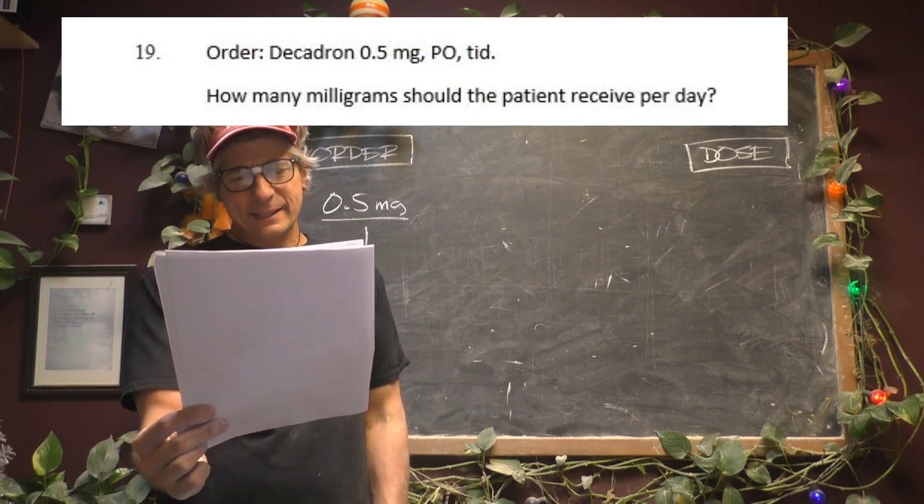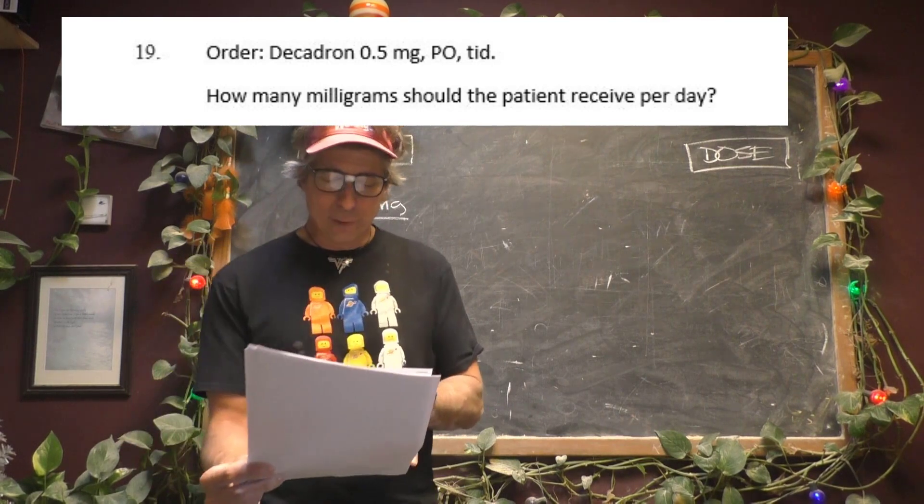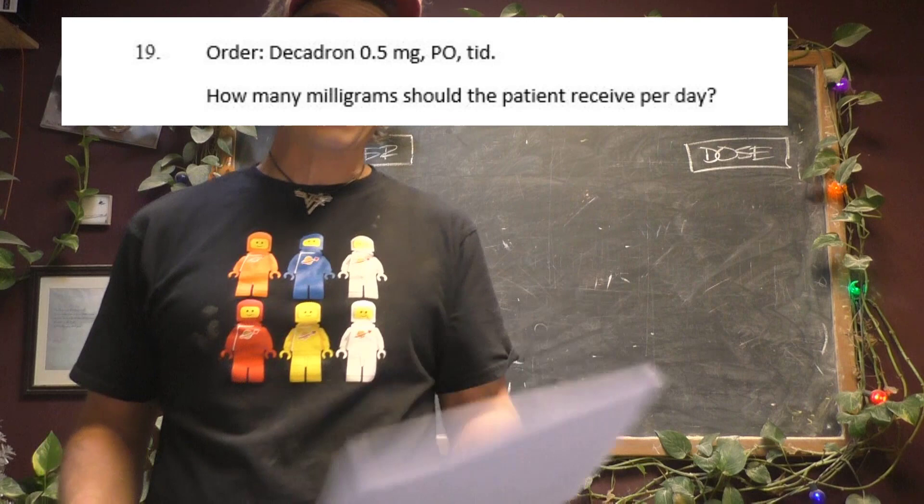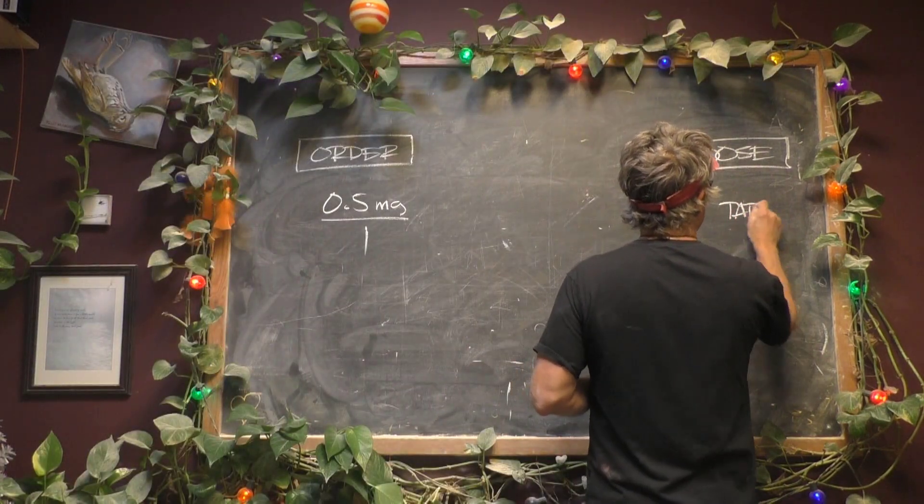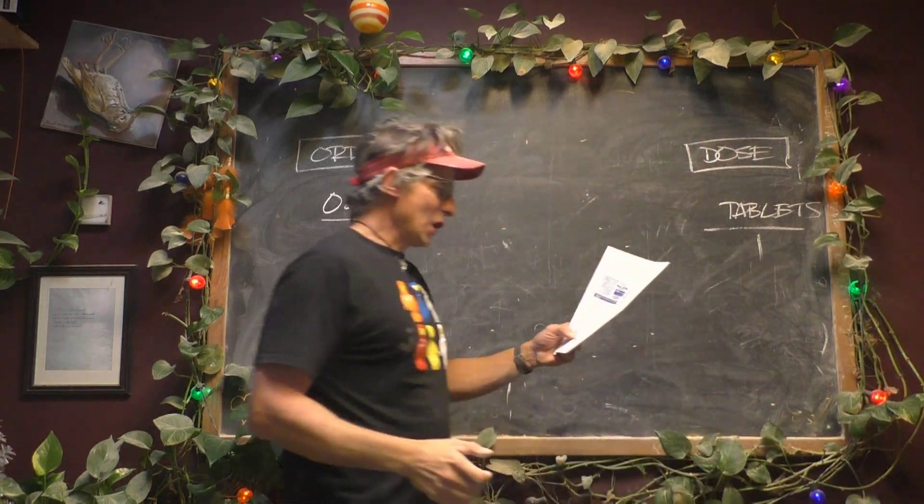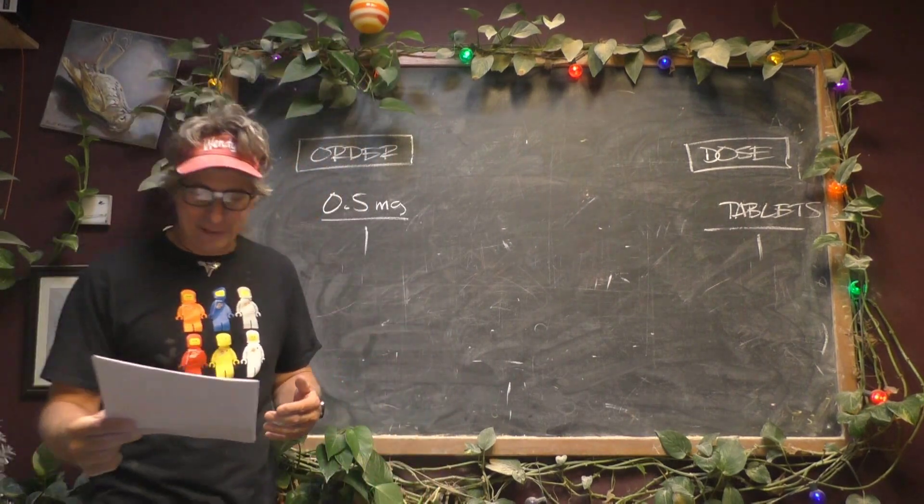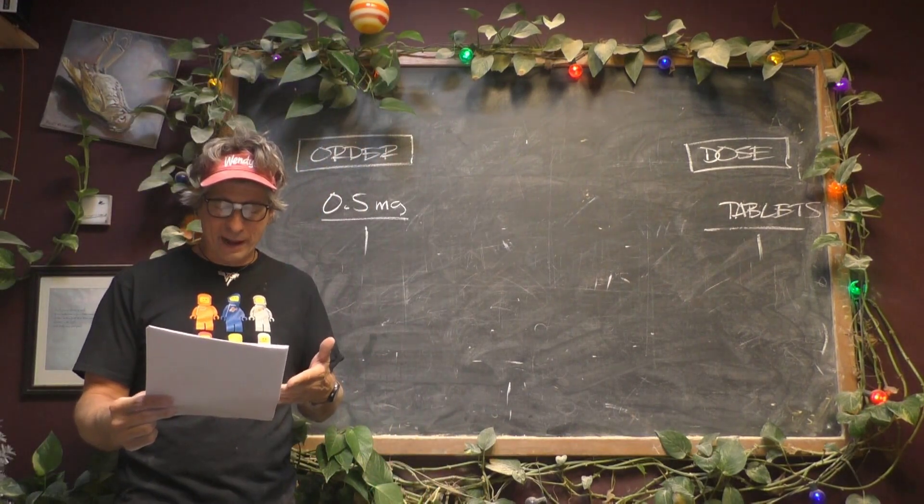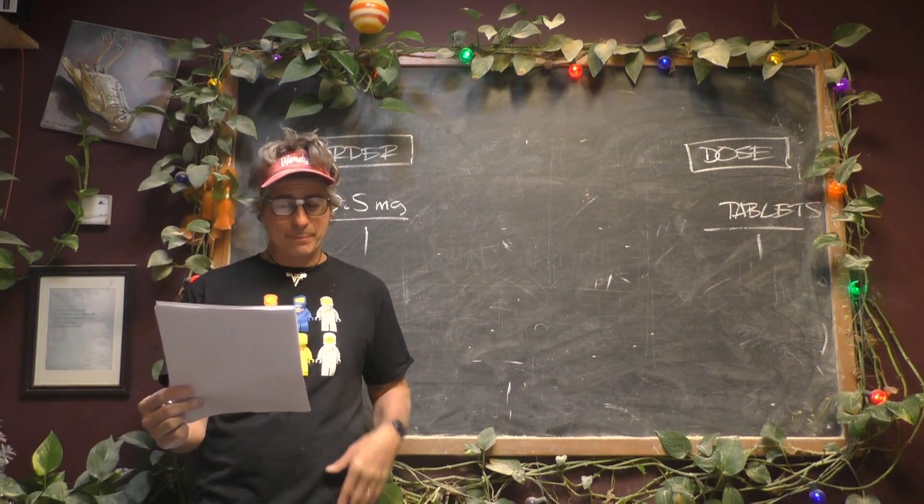I'm going to take a guess and assume that means how many tablets, because I'm looking at the label as I'm reading the question and it says tablets. So I'm going to take a wild guess because otherwise the answer is 0.5, since it says the order is 0.5, unless PO or TID means something.